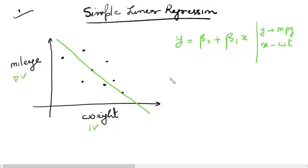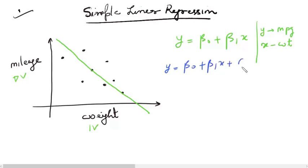We can also see that the relationship is not perfectly linear, because not all the points lie exactly on the straight line — a few points are away from or very close to the line but not exactly on it. Hence it is very important to add an error term to the equation. This error term is included because the line is not a perfect representation of the relationship between the dependent and independent variable.